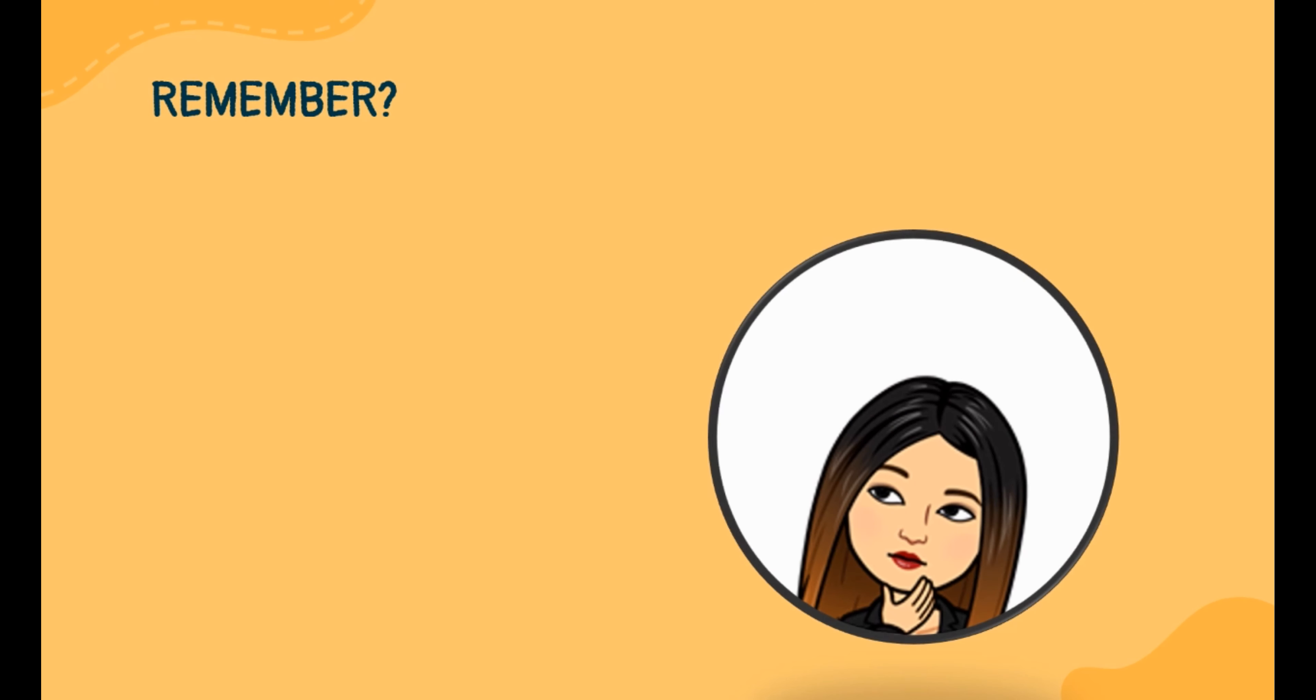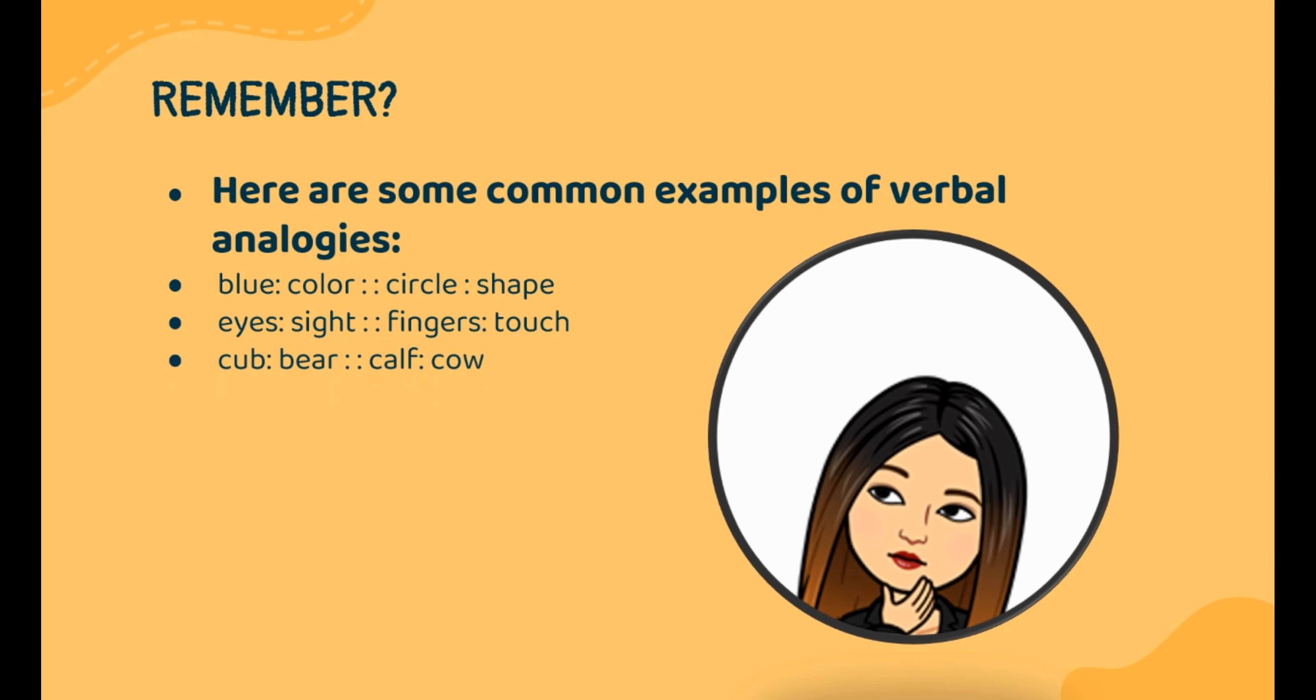Here are some common examples of verbal analogies. Blue is to color as circle is to shape. Eyes is to sight as fingers is to touch. Cub is to bear as calf is to cow. Sand is to beach as water is to ocean.